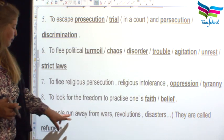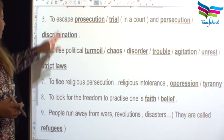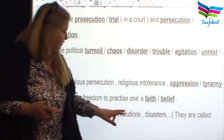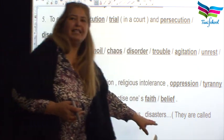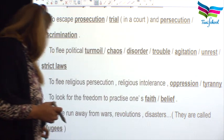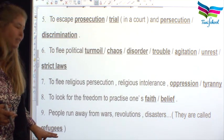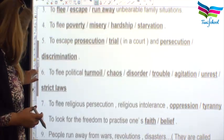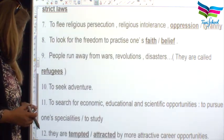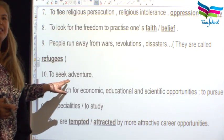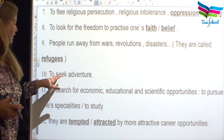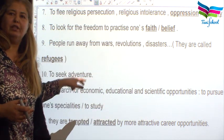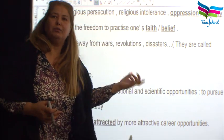Number nine: people who run away or flee from wars, revolutions, and disasters are called refugees. Refugees represent involuntary migration — they did not choose to flee. Number ten: to seek adventure. 'To seek' means to look for, and when you look for adventure, it is a pull factor, not a push factor.